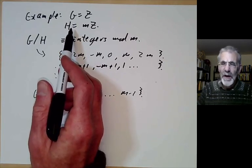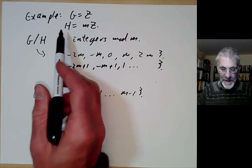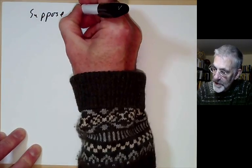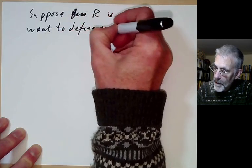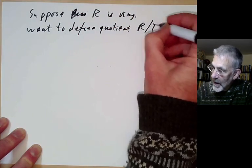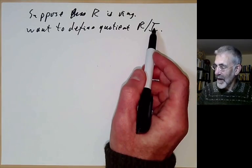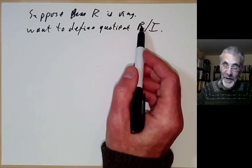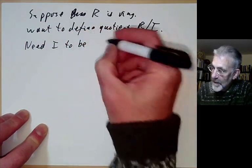If the group G is non-abelian, you can do something similar, but there are complications — it doesn't work for all subgroups H; you need something called a normal subgroup. But we won't go into that since all our groups will be abelian. Now we can do the same for rings. Suppose R is a ring and we want to define a quotient R mod I. You might think we can take I to be a subring, but that doesn't quite work, since a subring contains the identity, and quotienting would collapse everything.